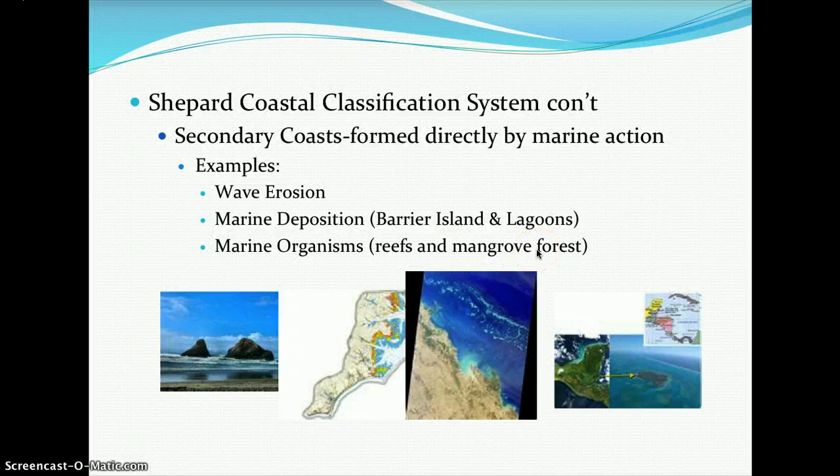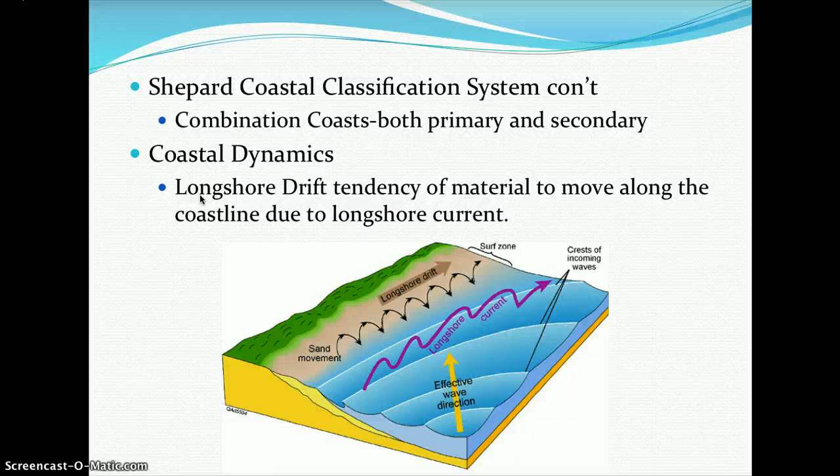The Shepard Coastal Classification System also includes a combination coast, where you have both primary and secondary processes — formations not due to marine interactions combined with those that do have marine interactions. That would be a continental coast.